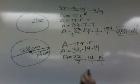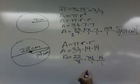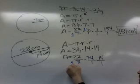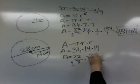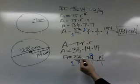Now I see that 14 and 7 are both divisible by 7. So 7 divided by 7 is 1, 14 divided by 7 is 2. And basically we now have 22 times 2 times 14.